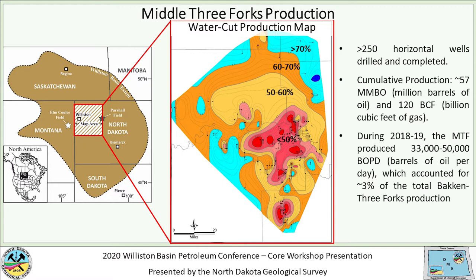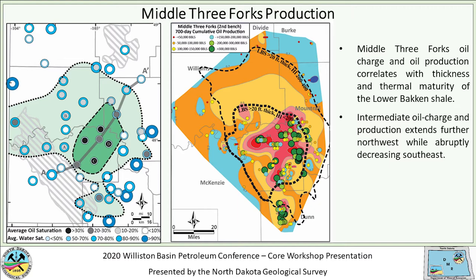On this next slide, I've added production bubbles representing cumulative oil production from wells over their first 700 days. Larger, greener bubbles represent wells that have cumulatively produced 300,000 barrels of oil or more in their first 700 days, while smaller, less green circles indicate less cumulative oil. Those larger, more productive wells for the middle Three Forks are located in and around the low water cut areas.